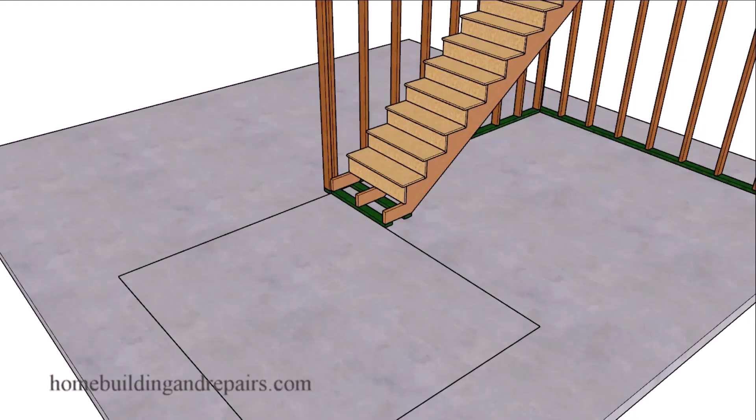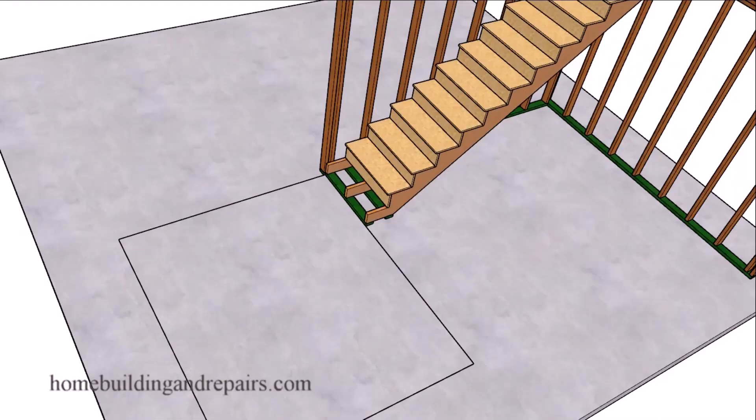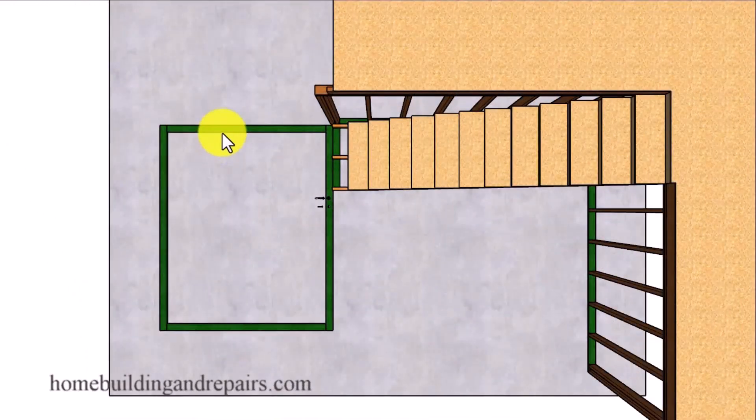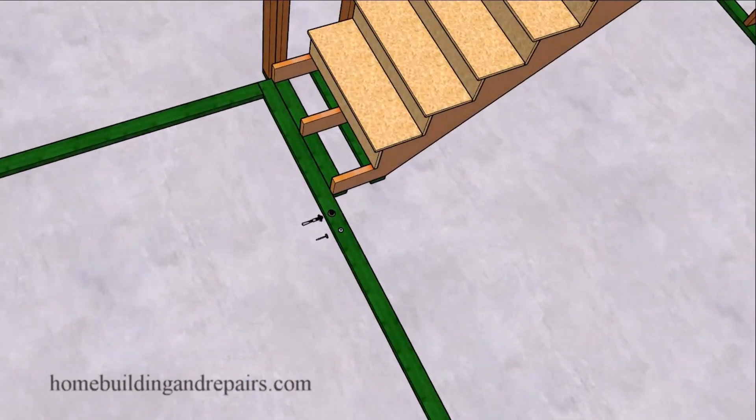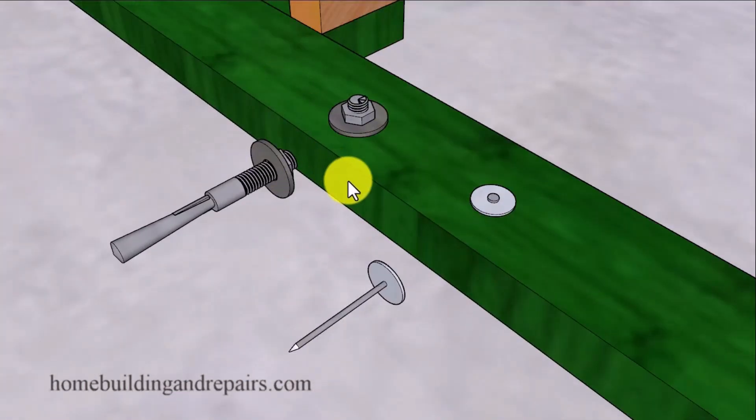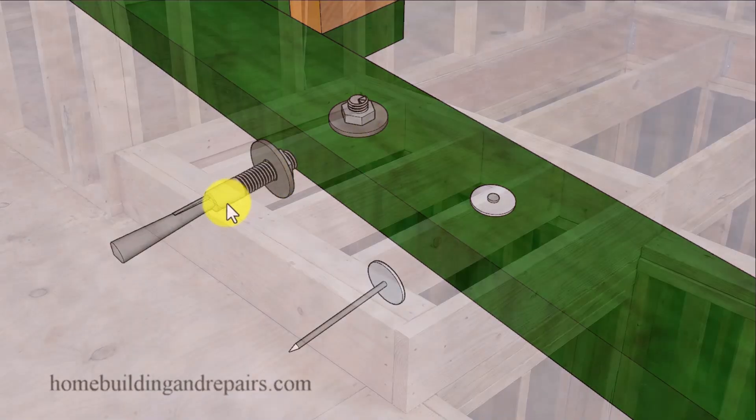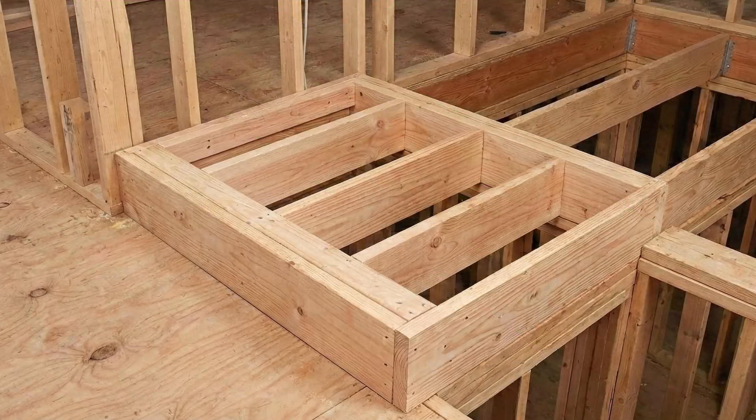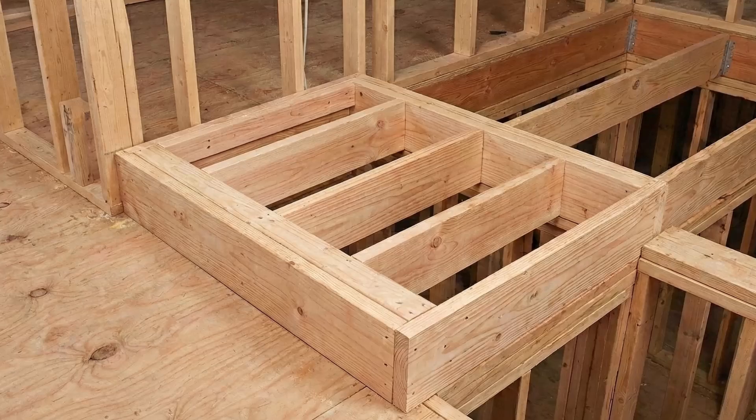Step two will be to mark the perimeter of your landing. Then cut your treated base plates to size. For concrete floors use wedge anchors, epoxy with all threads, or a powder actuated tool that uses shots and pins. For wood floors use nails, screws, and construction adhesive.